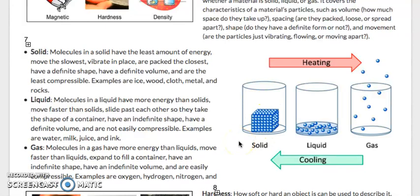Liquid. Molecules in a liquid have more energy than solids, move faster than solids, slide past each other so that they take the shape of the container, have an indefinite shape, have a definite volume, and are not easily compressible. Examples are milk, water, juice, and ink. You can see here, this is liquid. They're a little bit more spread out.